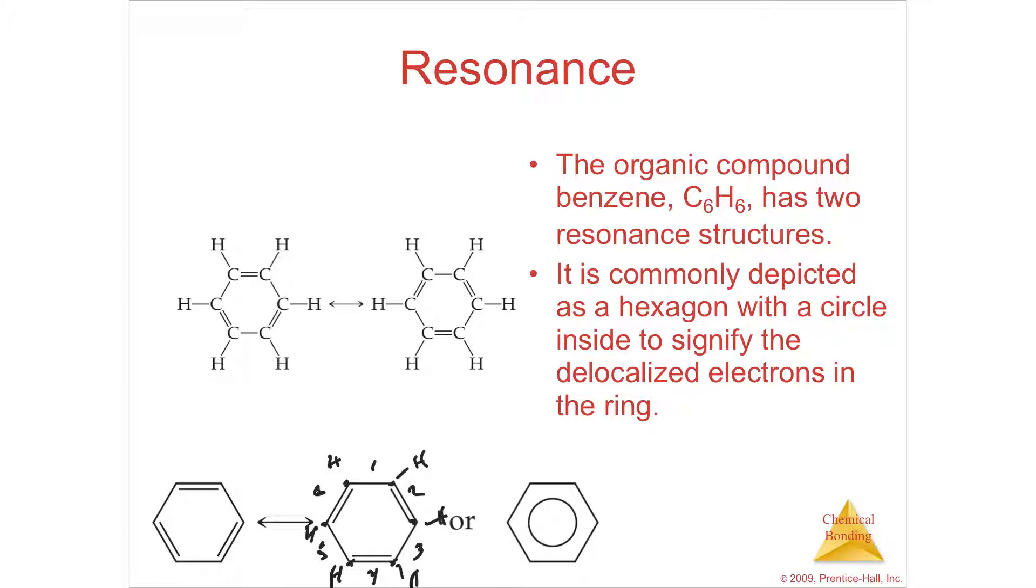It's not like it's turning back and forth - the electrons are flipping back and forth and actually acting like an average between them. So the shorthand version of benzene is just a hexagon with a circle on the inside. That's showing it's an average between the two forms of the double bonds. It's called a benzene ring.